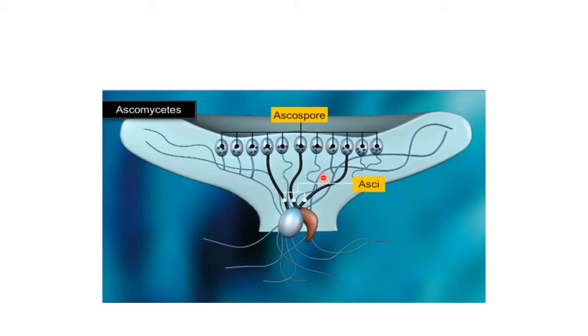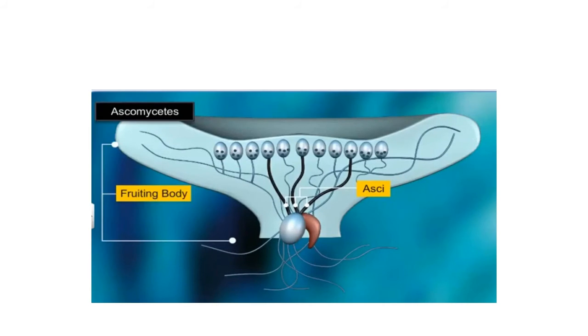Ascomycetes also undergo sexual reproduction by producing spores known as ascospores. The ascospores are formed in sac-like structures called asci (singular: ascus). These asci are arranged in specialized fruiting bodies called ascocarps.